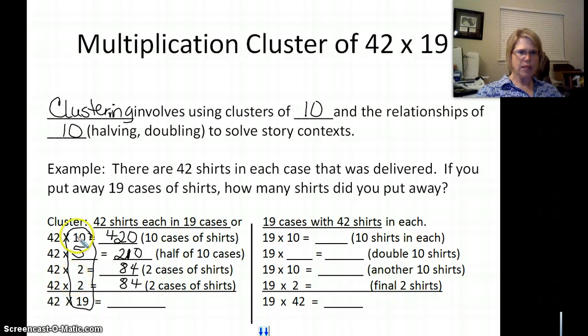All we have to do now, boys and girls, is we have to add this together. Now I'm going to add it in two separate sets. Because it's a little bit easier to sometimes do it in two parts. These top two right here is going to be 630. And then this two groups of 84, 84 and 84 is 168. And I bet you could probably do that from your head and get 798.